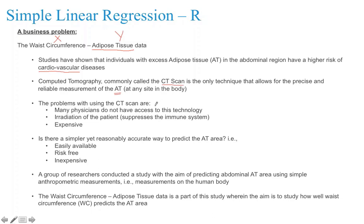CT scan is the best measure, but there are challenges: many physicians do not have access to this technology, the radiation can suppress the immune system of patients, and it is expensive. So the question is: is there a simpler yet reasonably accurate way to predict adipose tissue that is easily available, risk-free, and inexpensive?